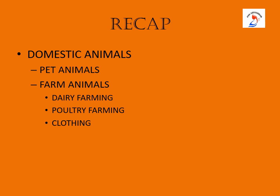Farm animals are reared in farms; they give us food and raw materials for clothing — examples are cows, ducks, hens, and goats. We also learned about dairy farming and poultry farming. Dairy farming is rearing animals that give milk and milk products. Poultry farming is rearing birds for their eggs and meat. Then we learned about how animals provide us clothing.